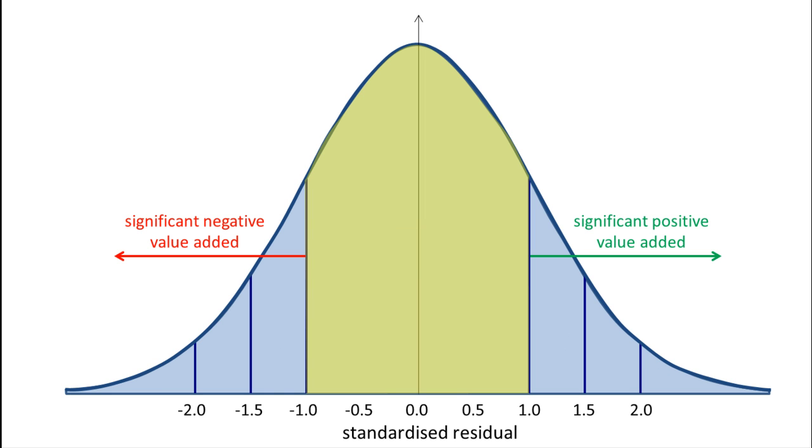In summary, value added is calculated by comparing the progress an individual or a cohort has made with an expected level obtained from a large sample. Residuals are used to quantify how much more or less progress than expected has been made, and these are often standardised so that comparisons can be made between different years and different subjects. Average standardised residuals can be used as a measure of value added for groups or for whole cohorts of students.